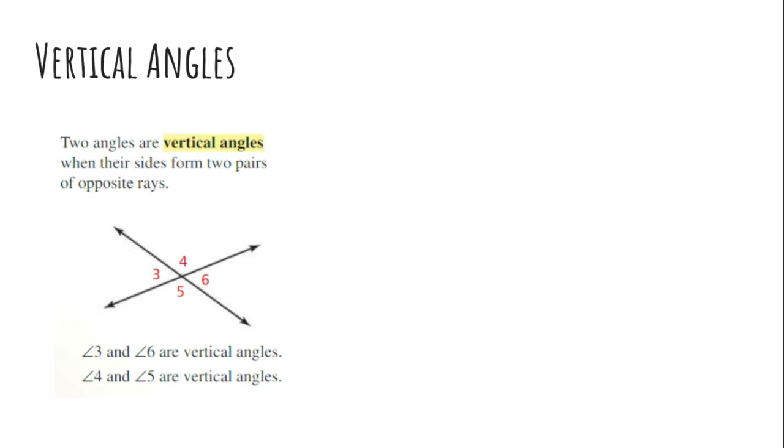This video is about the concept of vertical angles. This comes from your textbook, but it says two angles are vertical angles when their sides form two pairs of opposite rays.